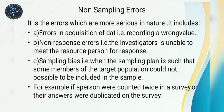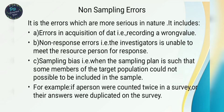Next is non-sampling error. These are errors which are most serious in nature. They include errors in acquisition of data — for example, recording the number 10 by mistake. Second are non-response errors, where the investigator is unable to meet the resource person for a response.